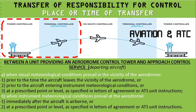When instrument meteorological conditions prevail at the aerodrome, the aerodrome control tower immediately transfers control of the departing aircraft once it is airborne to the approach unit. If there is a letter of agreement specifying a place or time of transfer — such as passing 3,000 feet, 2,000 feet, or 7,000 feet — they can release to the approach control unit at that point; otherwise they release immediately after the aircraft becomes airborne.